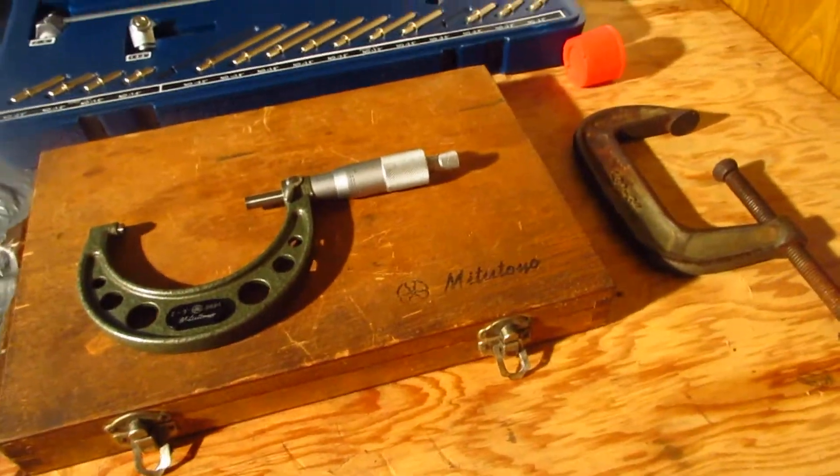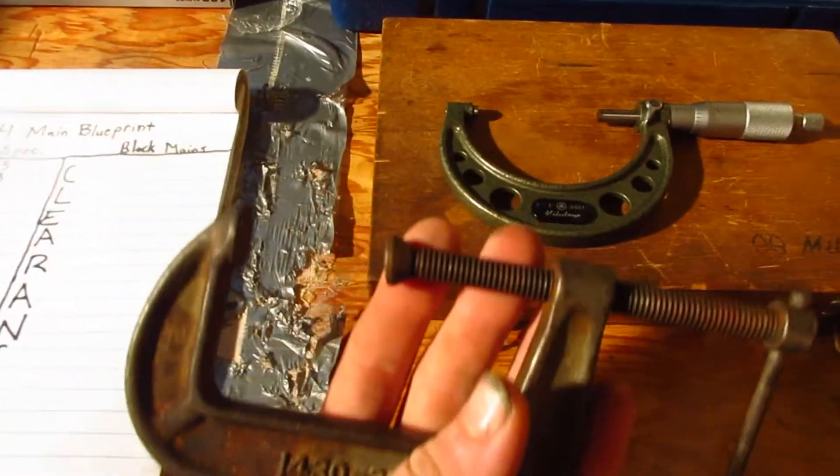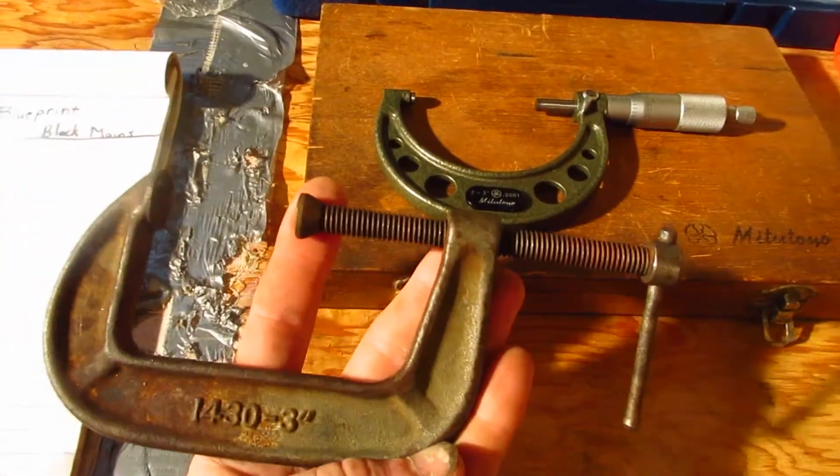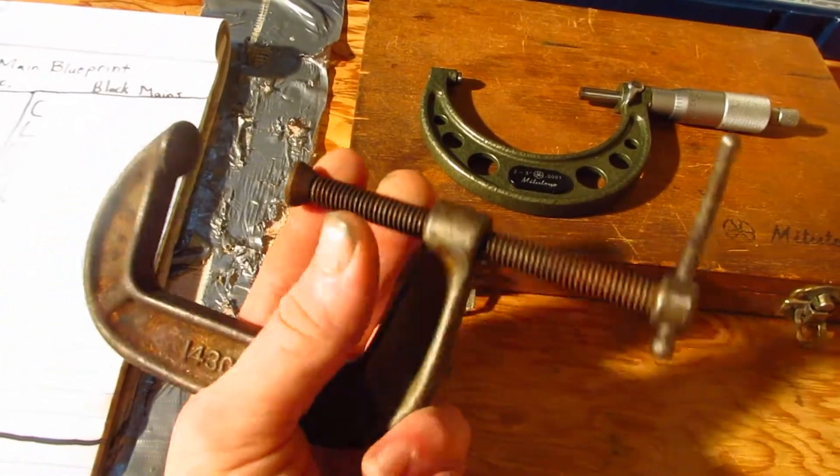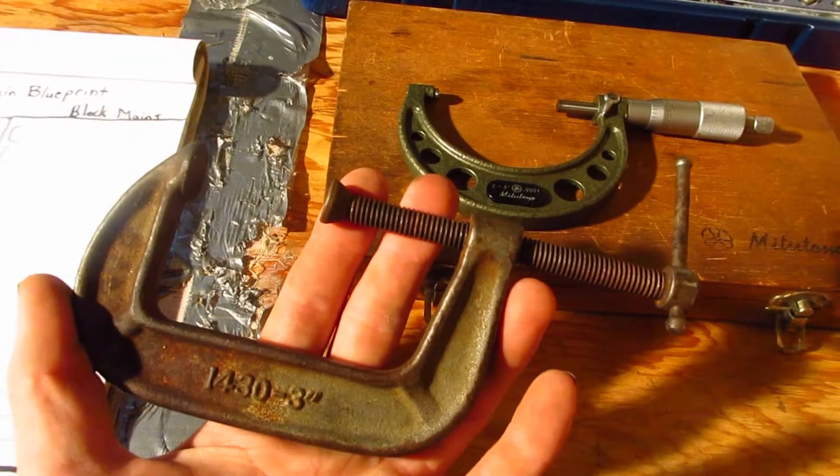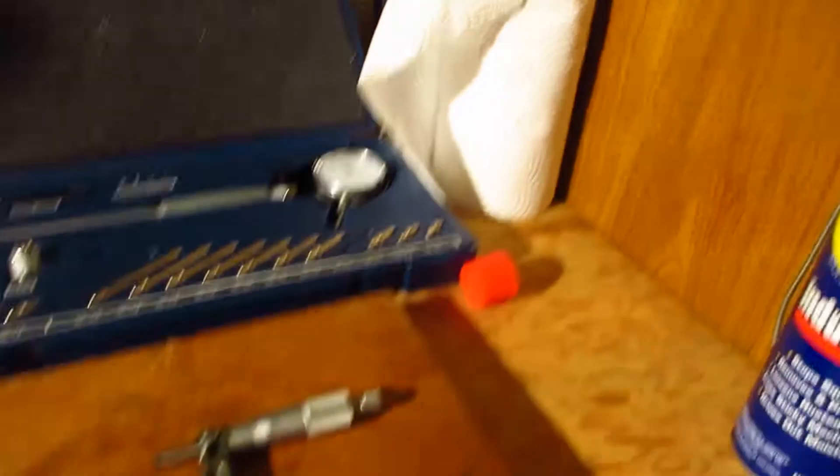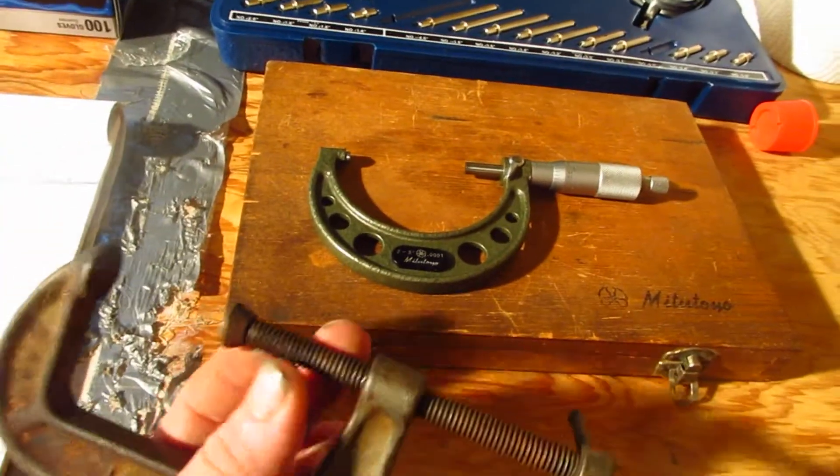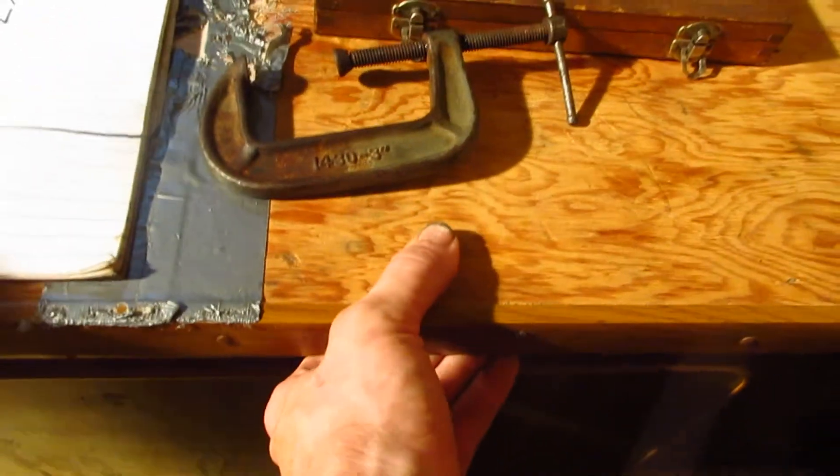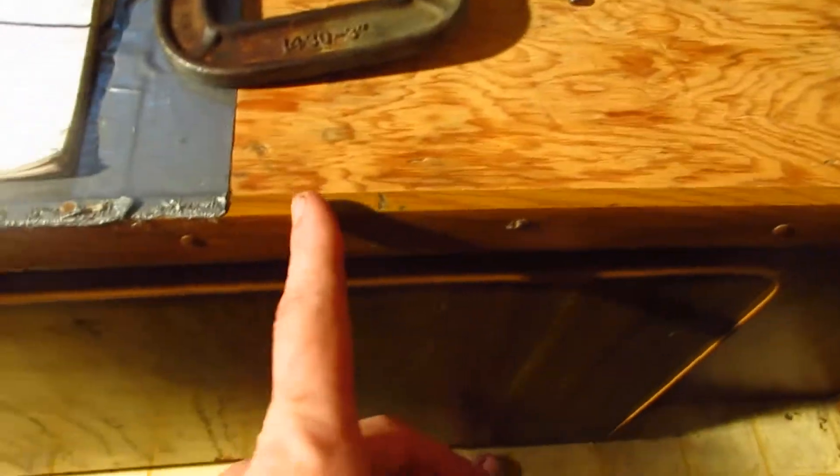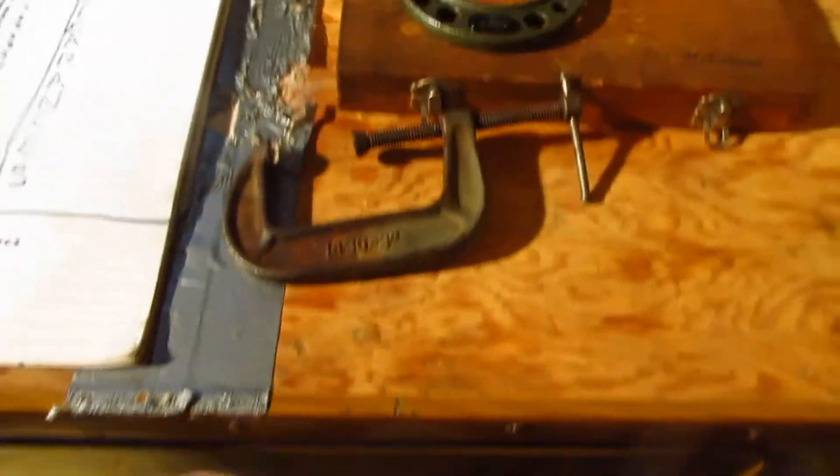You're also going to need a way to secure the micrometer. I don't have a bench or a table vise in here, so I'm just going to use a C-clamp and some paper towels to help protect the micrometer. I'm just going to mount it on the edge of this table here to where it sticks out, and I can zero my bore gauge off of it.